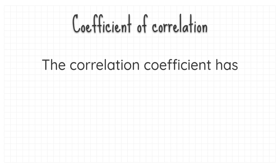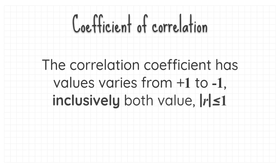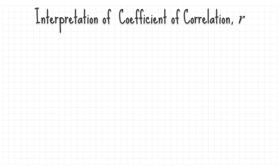The correlation coefficient has values varying from positive 1 to negative 1 inclusively, where the absolute value of r is less than or equal to 1. A correlation between variables indicates that as one variable changes in value, the other variable tends to change in a specific direction.